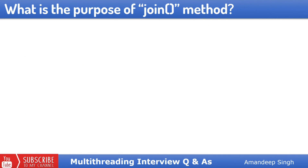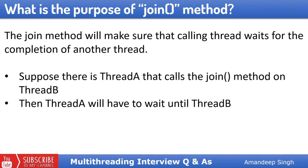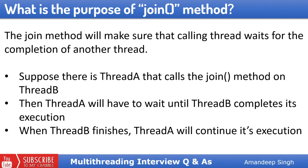The first question is, what is the purpose of join method? If we call the join method on one of the threads from the currently running thread, then the currently running thread will wait for the other thread to finish its execution before continuing with its own processing. Suppose there is a thread A that calls join on thread B, then thread A will have to wait until thread B finishes its execution. When thread B finishes, thread A will be able to continue its further execution.